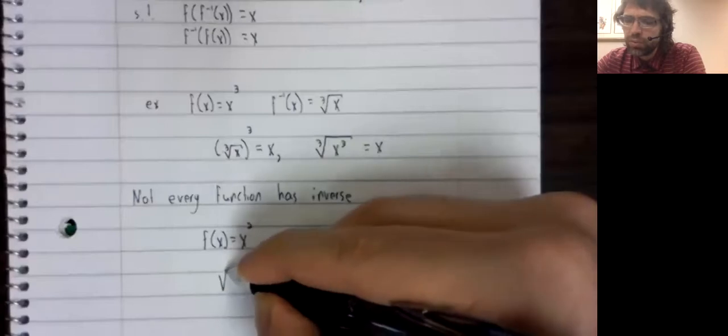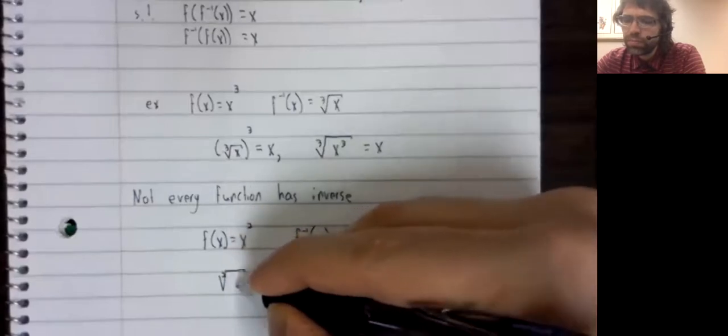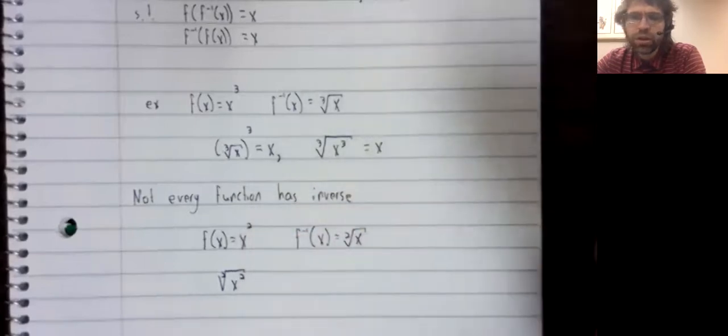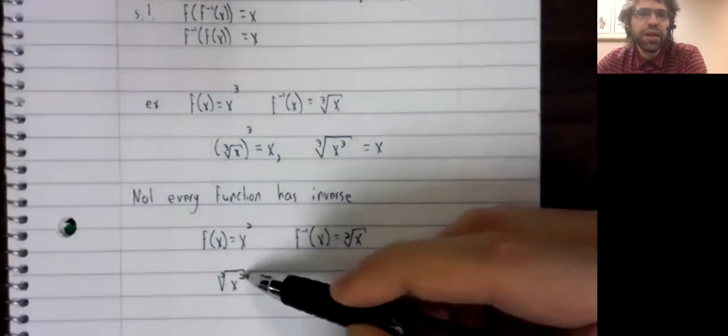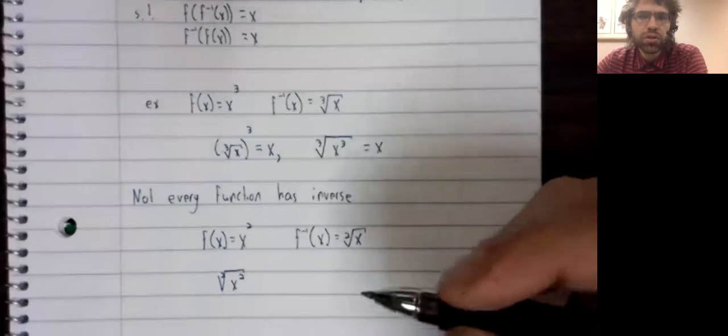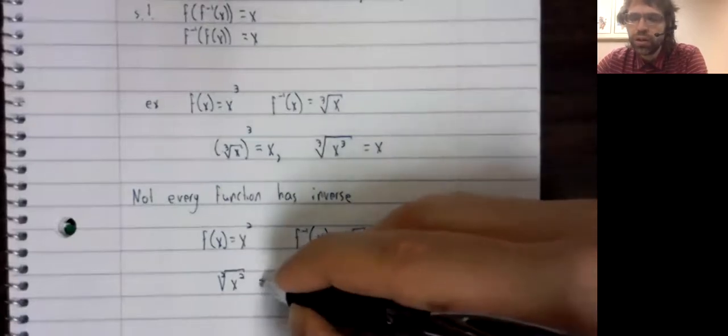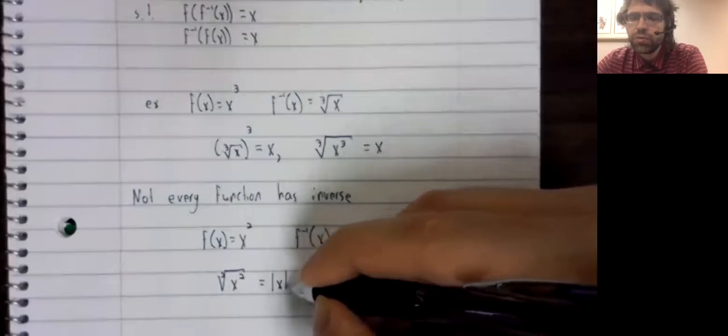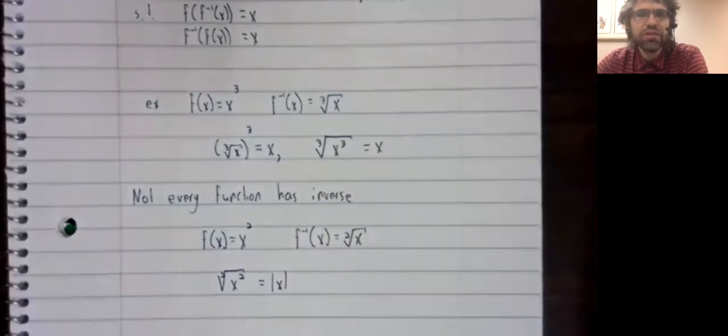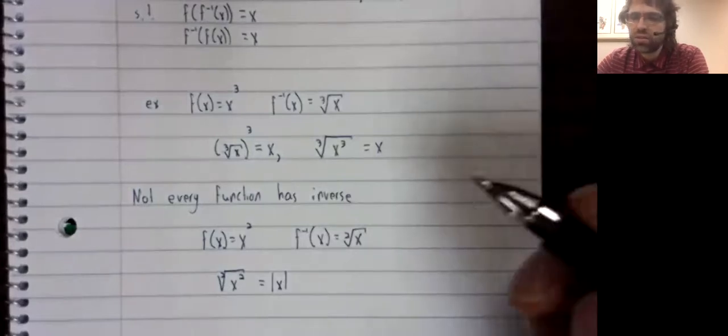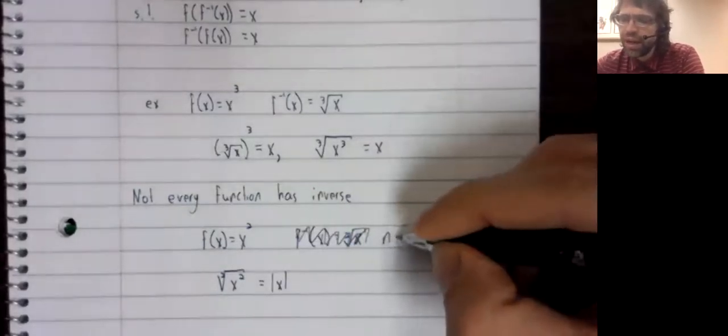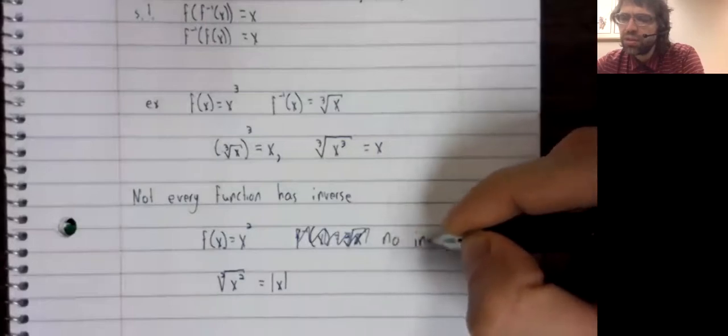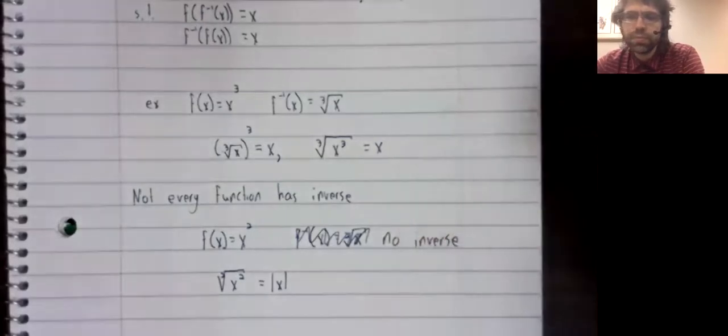The square root of x squared is not x. This function and this function do not undo one another. The square root of x squared is the absolute value of x, not x. This function has no inverse.